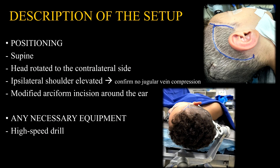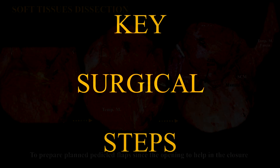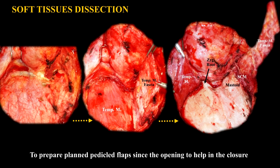The patient is positioned supine with the head rotated to the contralateral side and the ipsilateral shoulder elevated. It is important to confirm no jugular vein compression. A modified arciform incision around the ear is performed to allow exposure from the mastoid to the temporal region. Following skin incision, the fascia of the temporalis muscle is dissected while the scalp remains attached to the sternocleidomastoid muscle.